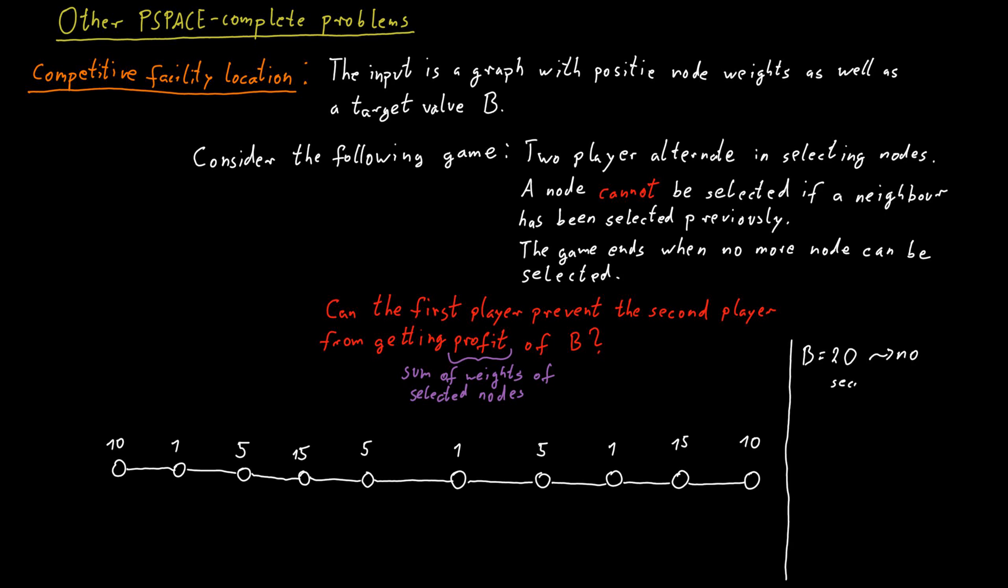And the answer in this example is no. Although it's possible that you will have to look at this example for a little while to see that indeed the answer here is no. If we change the threshold to be 25 instead of 20, then the answer becomes yes. The first player can prevent the second player from getting a profit of at least 25.